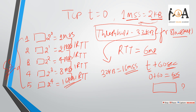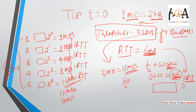After 16 MSS (slow start phase), the congestion avoidance phase begins: 17 MSS, 18 MSS, and so on. Now, 60ms divided by 6ms per RTT gives us 10 RTTs total. Slow start covers the first 4 RTTs (reaching 16 MSS by the 4th or 5th RTT), and we need to track up to the 10th RTT.